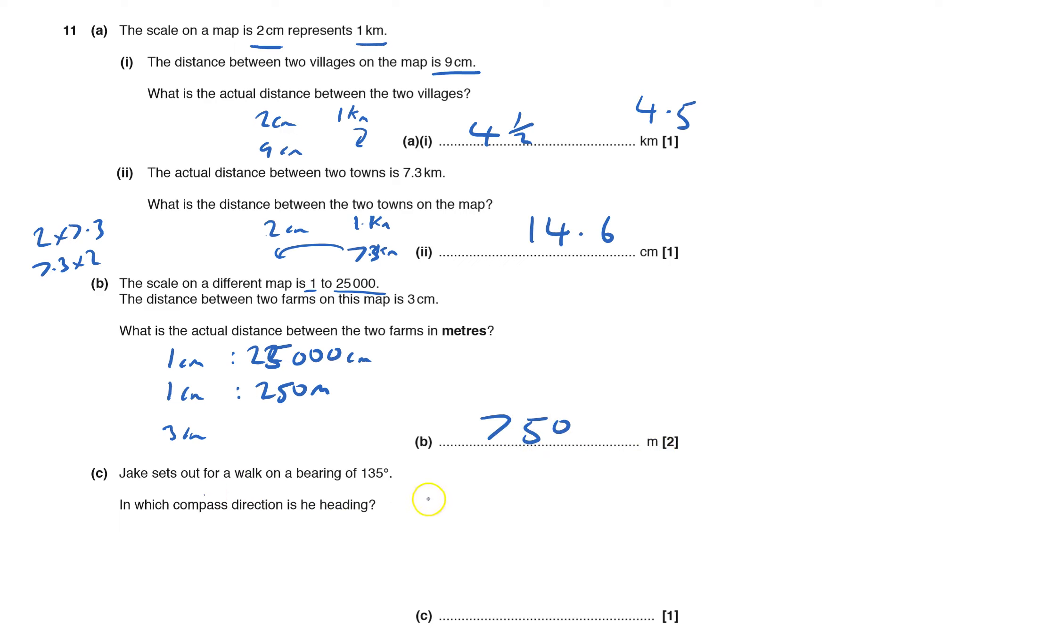Jake sets off for a walk on a bearing of 135. Bearings are always measured from north and go clockwise. It's going to 135, so that's 90, and then another 45, so it goes down here. That's the direction he's walking.